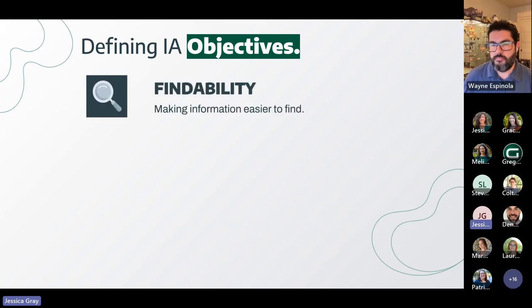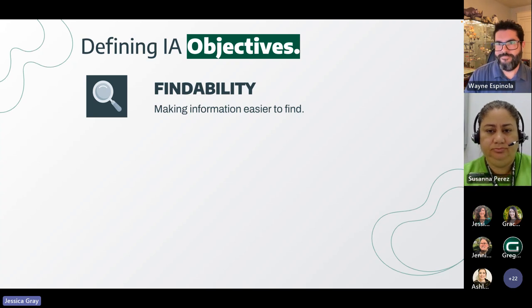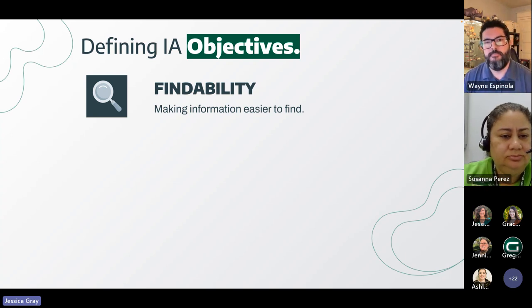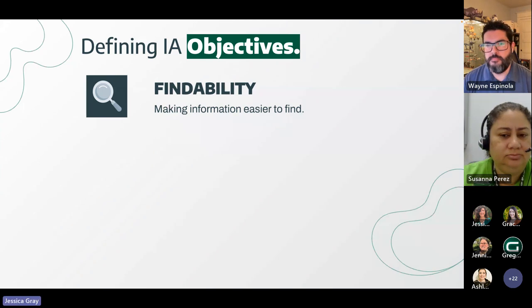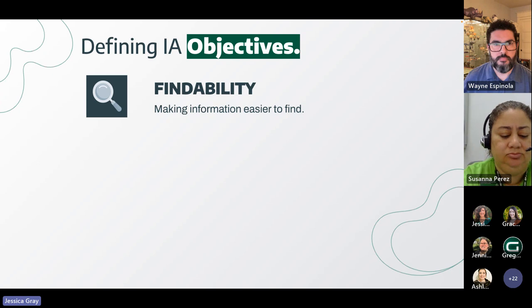Starting with findability — as the name suggests, it's about making information easier to find. Some information is readily obtainable, such as knowing what items you need to purchase at the grocery store because you made a list. But there can also be information that's harder to find. You may not know where it is, what it's called, or that it even exists. In this instance, you only get closer to what you're looking for as you progress, but it takes effort. For your users, this can be discouraging and could cause them not to return to your site.